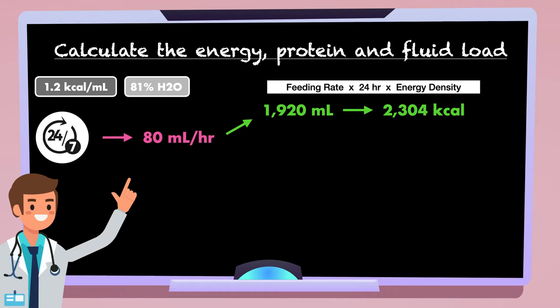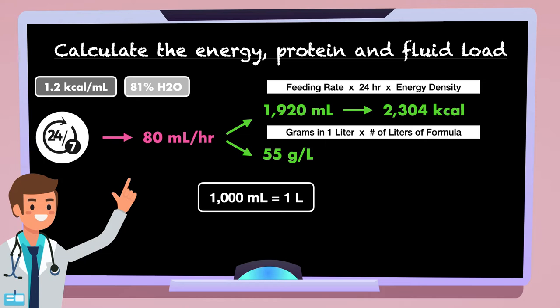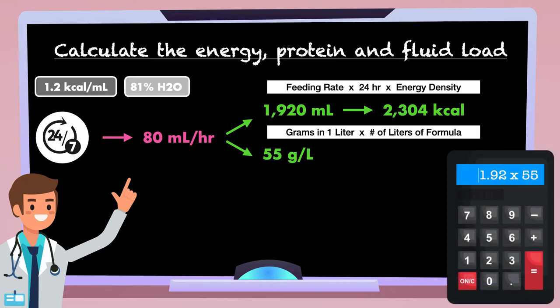For the protein load, you multiply the grams of protein in one liter by the number of liters of formula provided in a day. We have already seen that there are 55 grams of protein per liter of this formula. In addition to this, we know there are 1000 milliliters in one liter, therefore 1920 milliliters equals 1.92 liters. Now, we can multiply 55 grams per liter by 1.92 liters and end up with 105.6 grams of protein, which should be rounded down to 105.